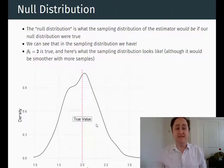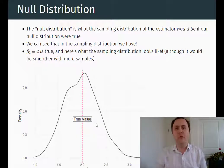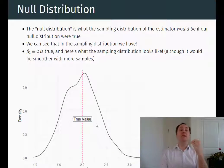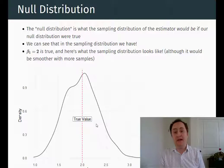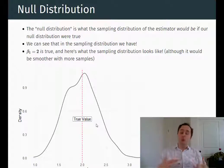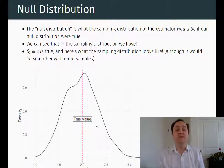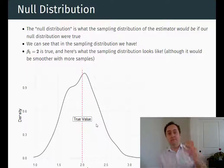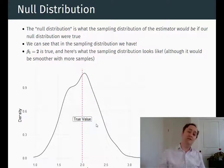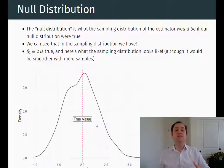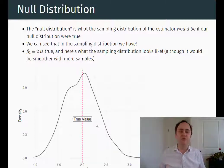A null hypothesis is a truth that we're going to test. We say, maybe the true value of beta is two, and we're going to test whether or not that's true. In order to test that, we need to think: if this were true, if the truth were actually two, what would the sampling distribution be? For an ordinary least squares coefficient, the sampling distribution is normal. The mean of that normal is going to be the actual true value, and the standard deviation is going to be based on the noise in the data.